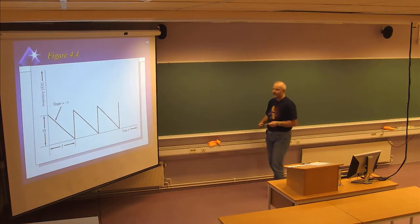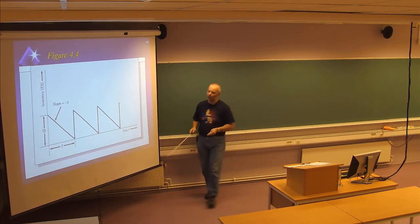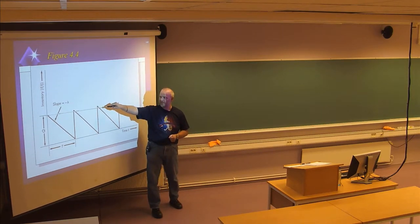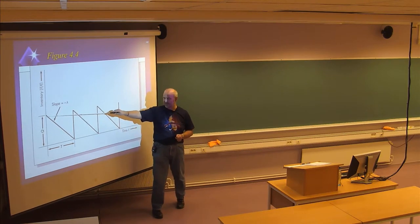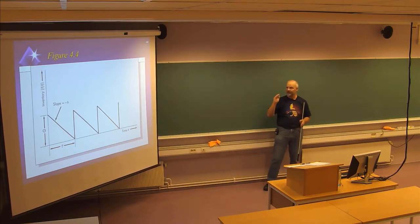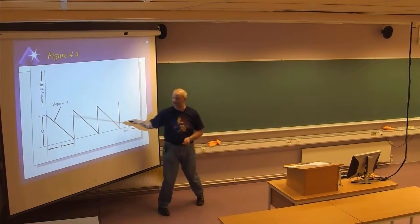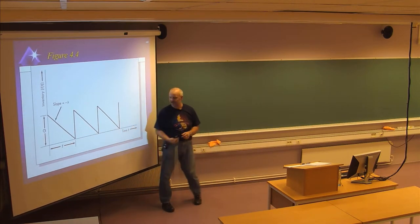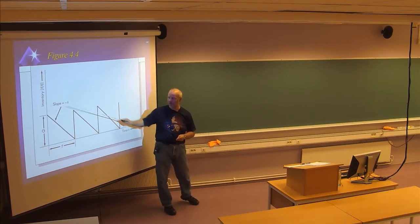This figure shows the inventory level over time. When the order quantity Q is decided, the maximum inventory level equals Q. Then with a fixed demand, the inventory decreases at a slope of minus lambda, the demand rate. When you reach zero inventory, a new order of the same size Q arrives. This repeats over several cycles, where the capital T is the cycle time — the time between one order and the next.